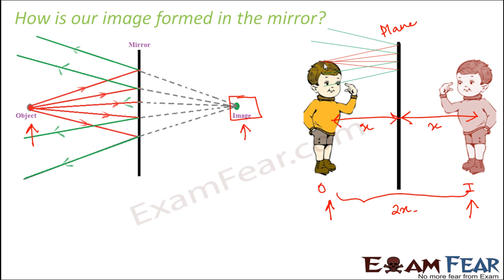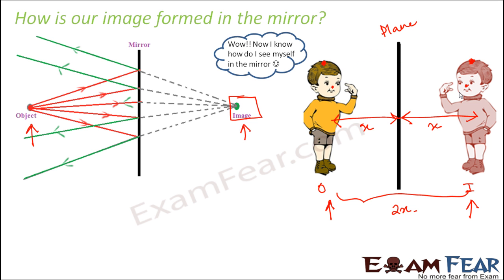In this way, image formation happens for each and every part of your body. For example, the reflected rays for a point on the head meet behind the mirror forming its image there. Similarly, for the nose, the image is formed at the corresponding point. That is how the image for each and every point of your body is formed in a plane mirror — and now you know exactly how you see yourself in the mirror!